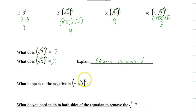What happens to the negative? The square also cancels the negative because a negative times a negative is a positive.